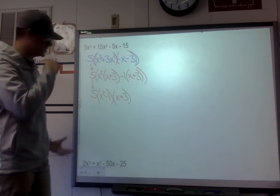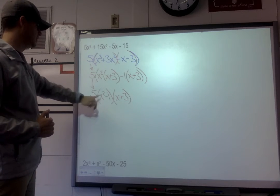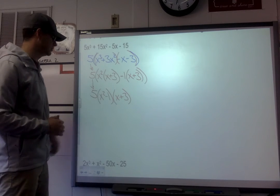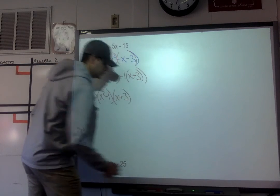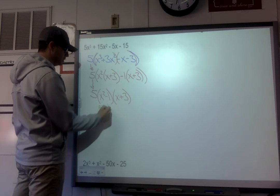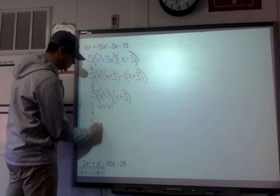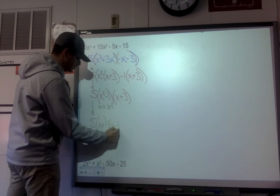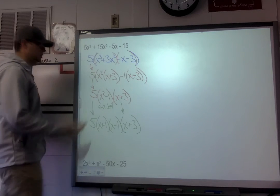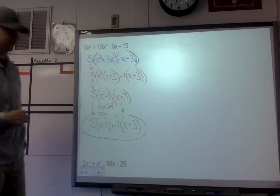Before saying that's our answer, notice that x² - 1 is a difference of squares — both x² and 1 are perfect squares. So a is x and b is 1. Factoring further: x² - 1 becomes (x + 1)(x - 1). Bringing everything down, our final answer after three rounds of factoring is 5(x + 1)(x - 1)(x + 3).